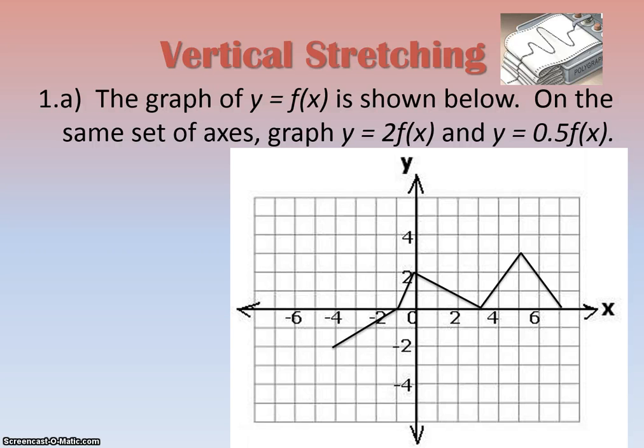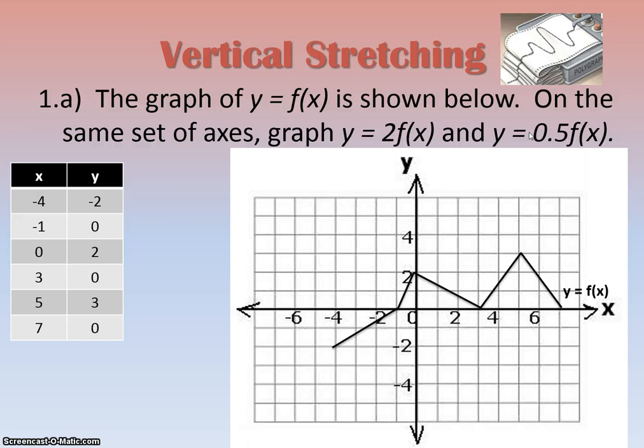In this example, we have y equals f(x). There's a graph of it right there. What they want you to figure out is what happens when you put a 2 in front of f(x) and when you put a 0.5 in front of f(x). We have a table of values of each of the points on the original f(x). So here's (-4, -2) right there, (-1, 0) is right here, and so on.